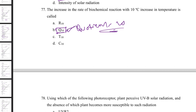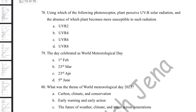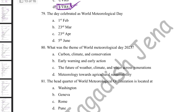The photoreceptor through which plants receive UVB solar radiation is UVR8. In the absence of UVR8, plants become more susceptible to UVB radiation. UVR8 traps UVB radiation, making the plant resistant. Without this photoreceptor, the plant is vulnerable to UVB damage.